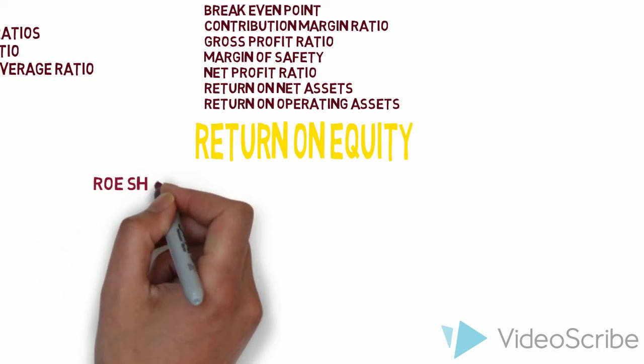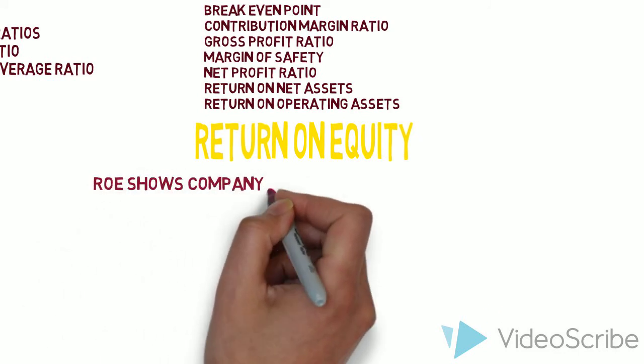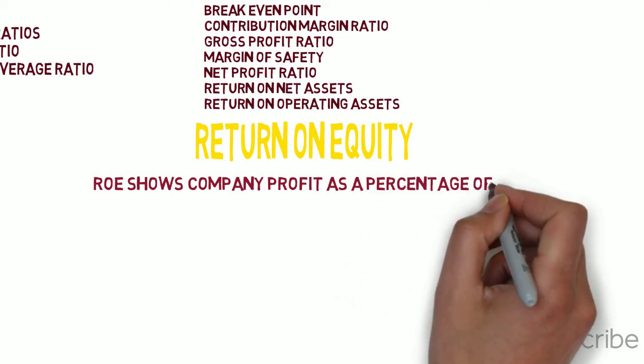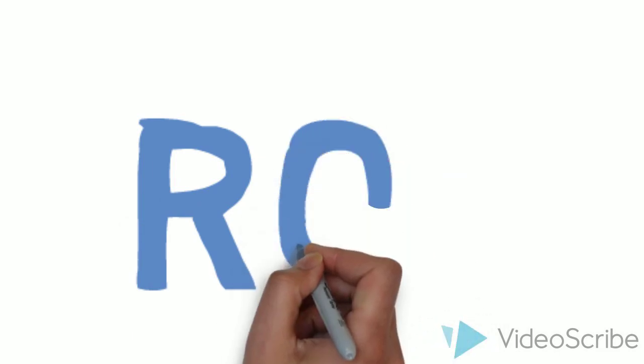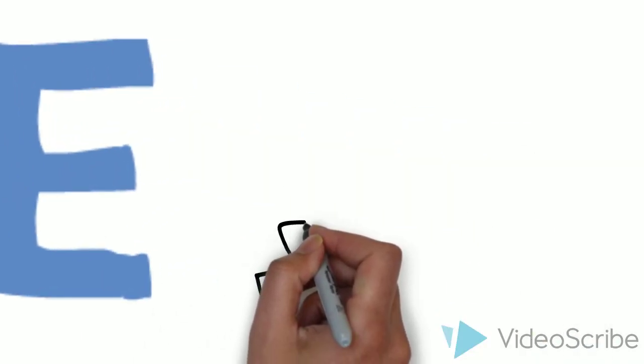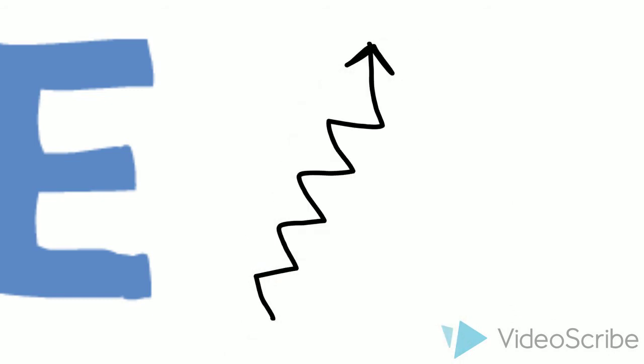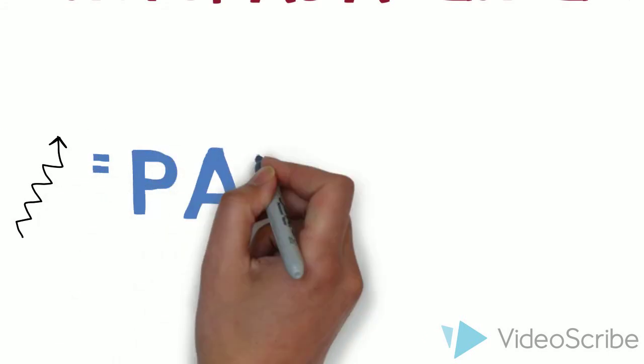Return on equity shows a company's profit as a percentage of equity. The best model to evaluate the performance of the company is the DuPont model. DuPont tells us the ultimate parameter to evaluate business performance is return on equity. If return on equity is increasing year on year, it is a very good business to invest in. ROE equals profit after tax divided by shareholders' funds.